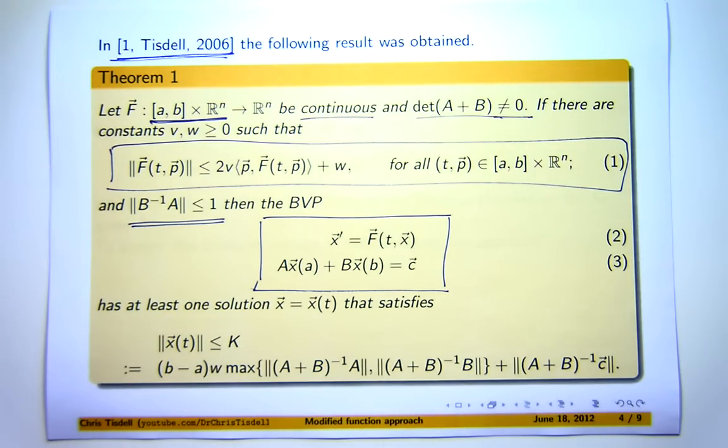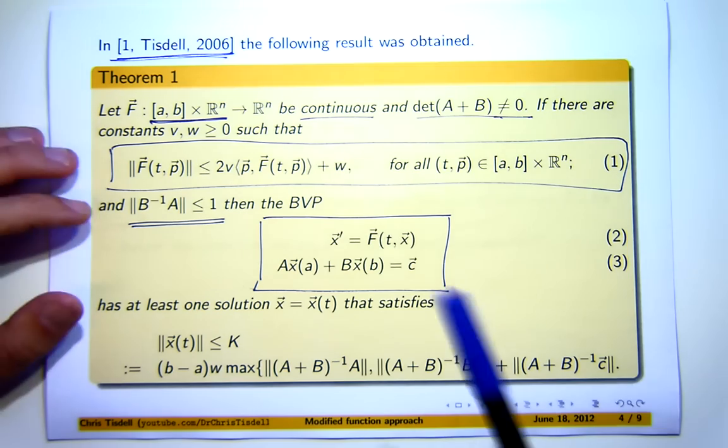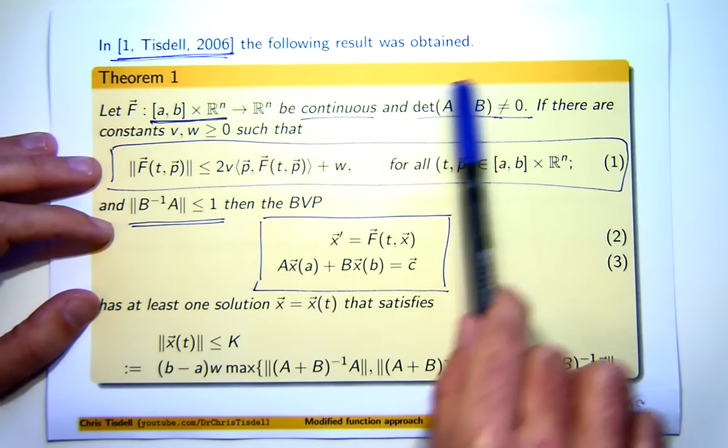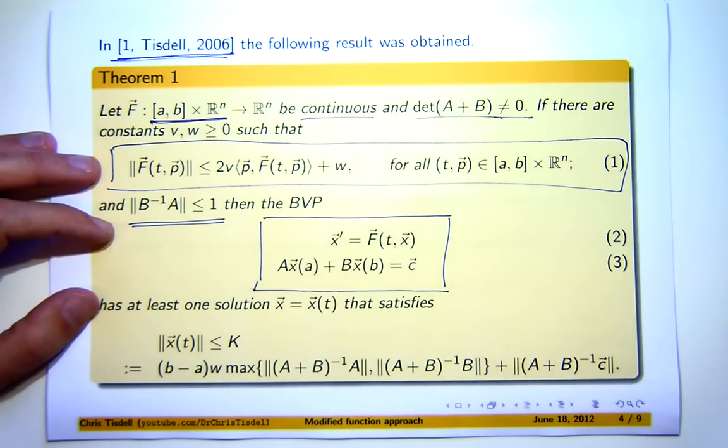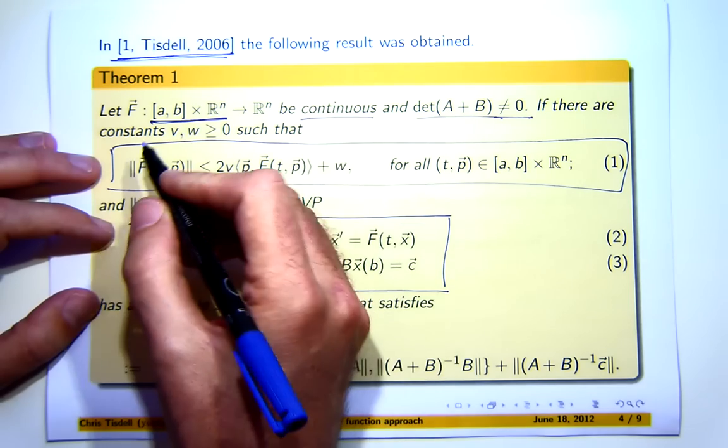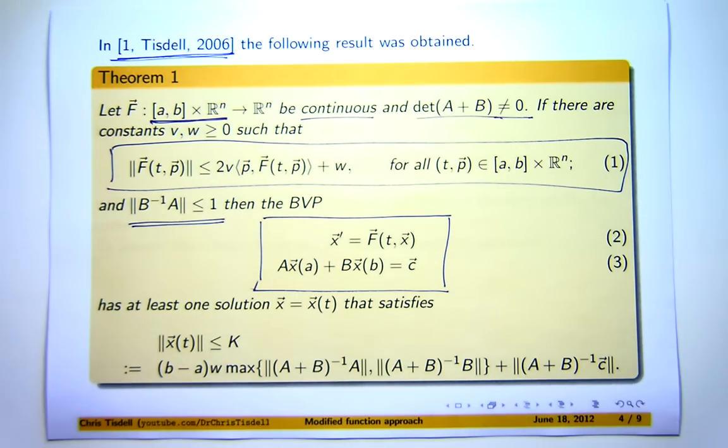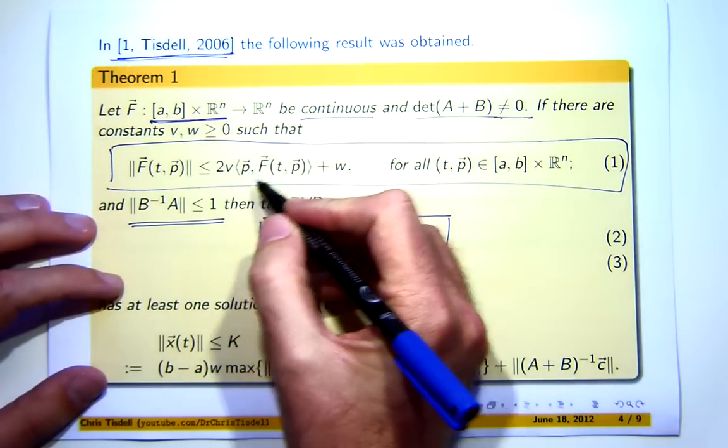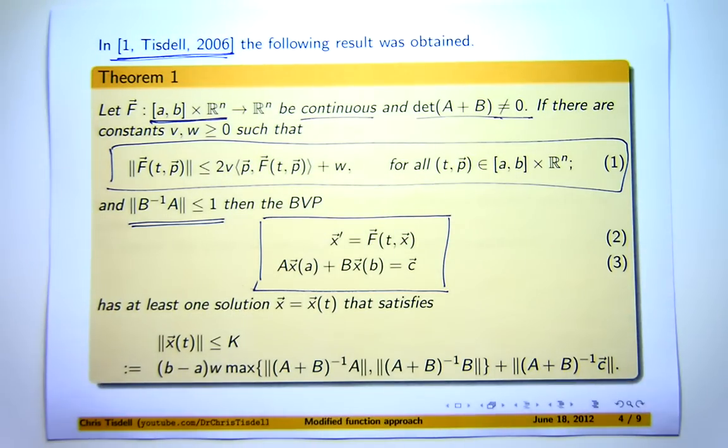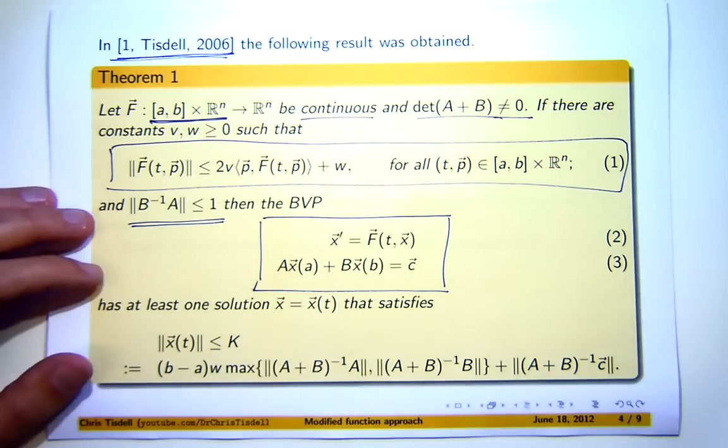Now this looks quite abstract on a first viewing, so let me break this down a bit for you. Essentially this means that these inverses will exist. Now by these two pairs of vertical lines, I mean the magnitude or the norm of this F. By these angled brackets, I mean the scalar product or the dot product, inner product, whatever you like, on R^n.